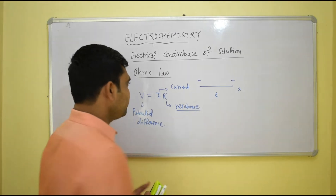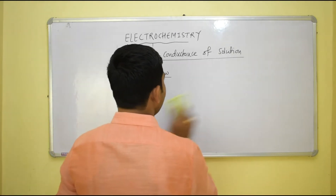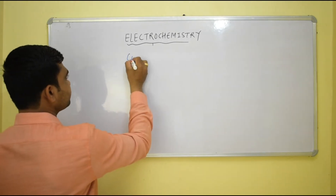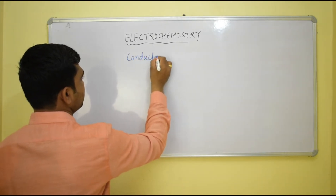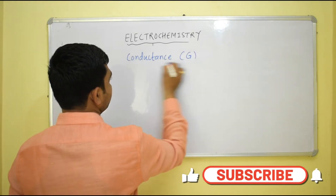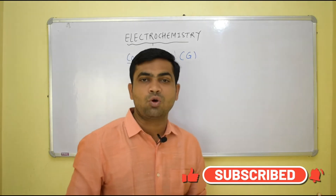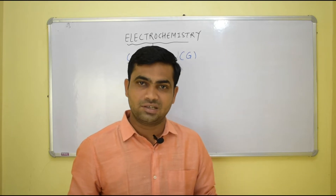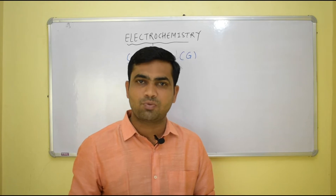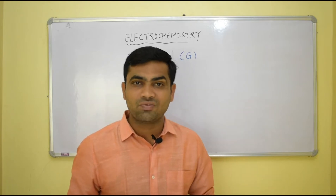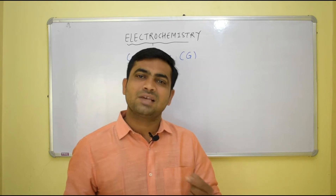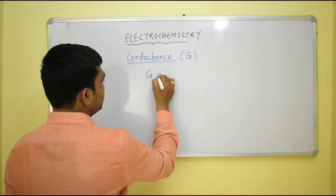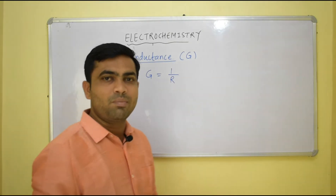Now let us discuss the next important term: conductance, shown by capital G. If a solution offers high resistance to the flow of electricity, its conductivity will be low, and vice versa. Therefore, conductance and resistance are inverse to each other. Conductance G equals the reciprocal of resistance: G = 1/R. More the resistance of the solution, less will be the conductance.